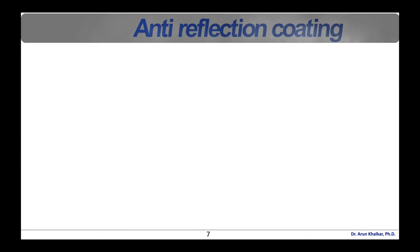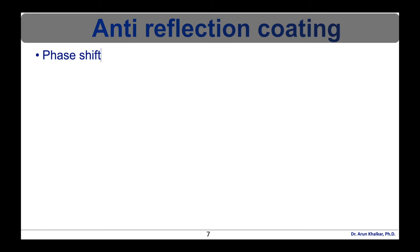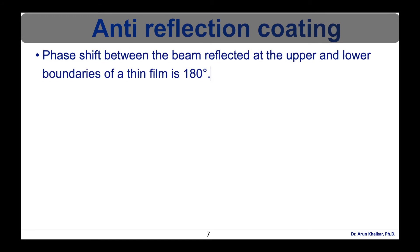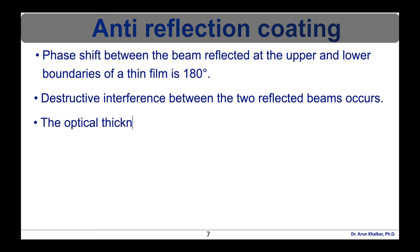Now if the interference in a quarter wave that is lambda by 4, anti-reflection coatings shown in this diagram, these anti-reflection coatings are designed so that the relative phase shift between the beam reflected at the upper and lower boundaries of the thin film is 180 degree. Destructive interference between two reflected beams occurs which cancels out both beams before they exits the surface.